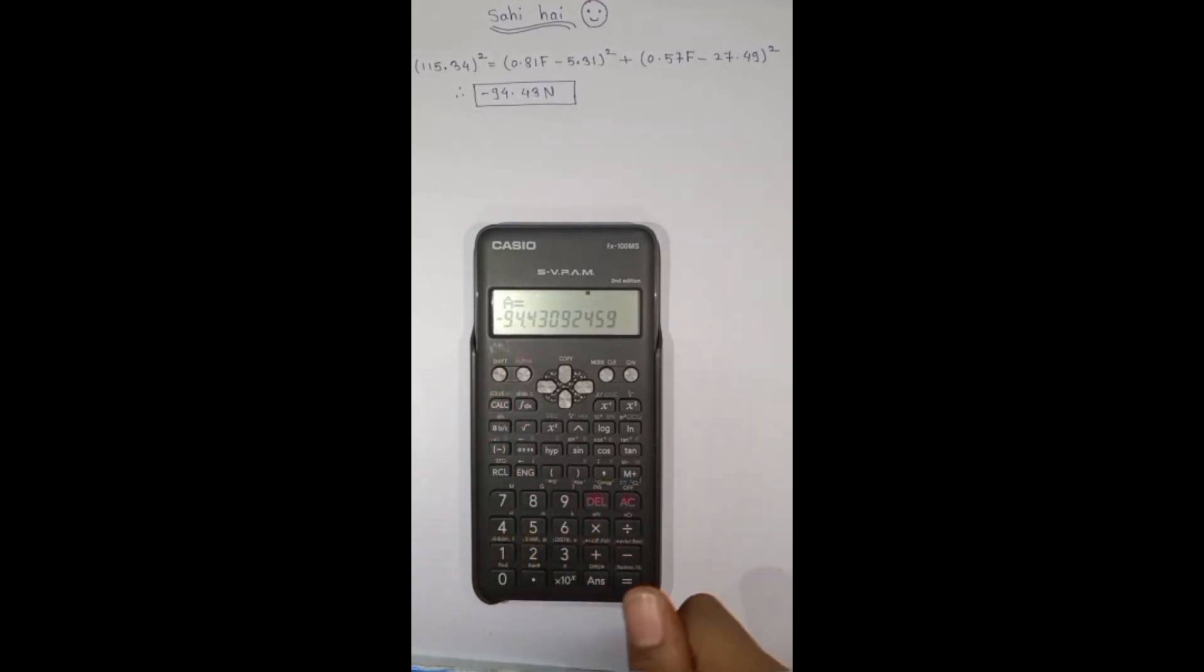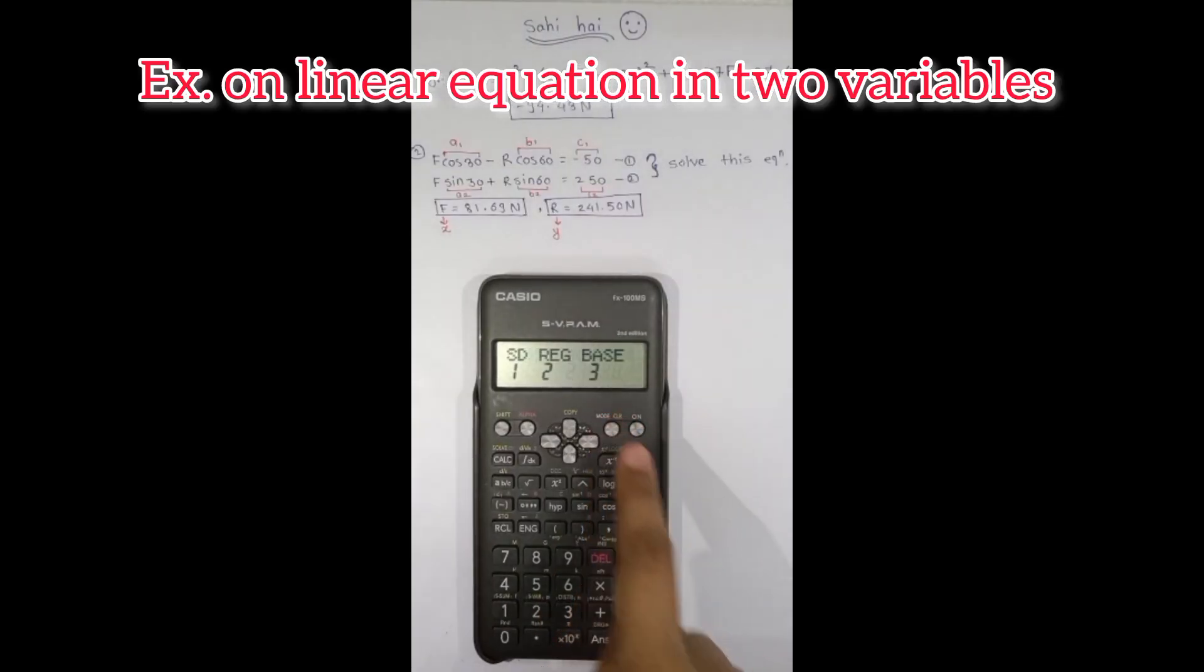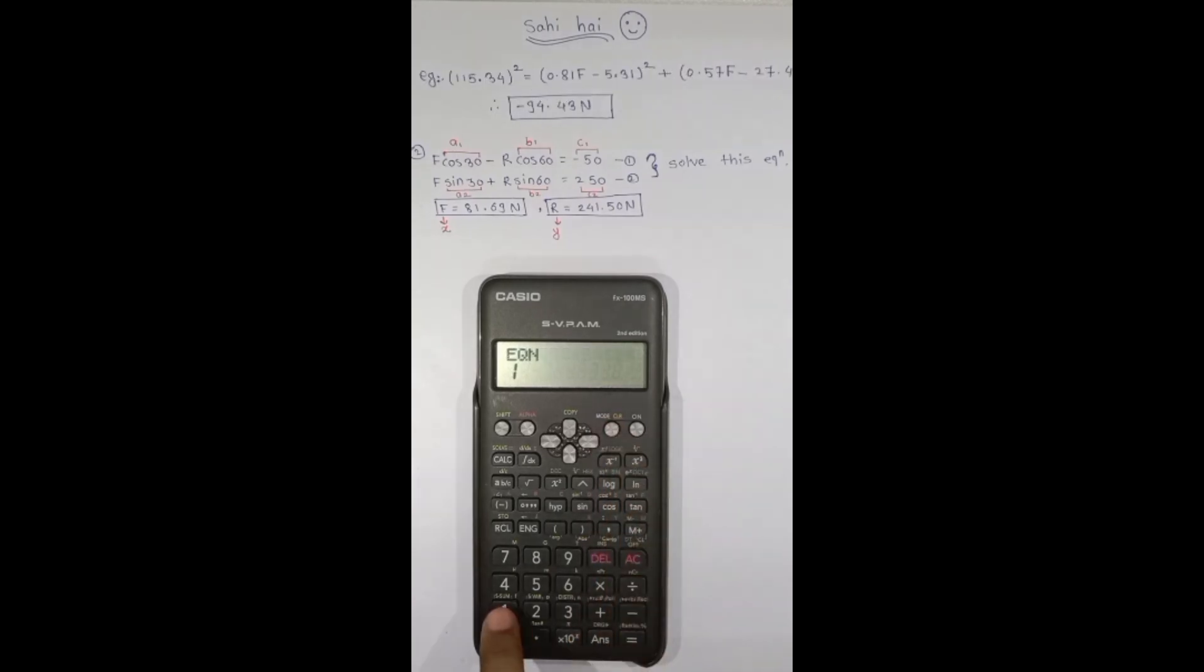Here's the solution. Let's see example number 2. Mode clear equation 1. Here unknowns are 2.